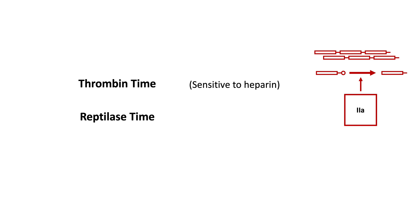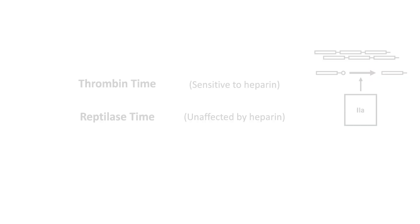The reptilase time uses the Bothrops snake venom, which resists inhibition by antithrombin and is unaffected by heparin and other direct thrombin inhibitors.